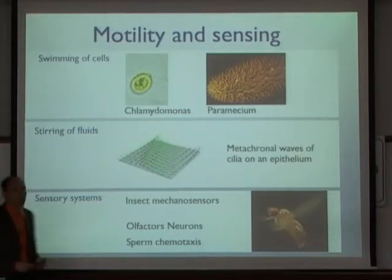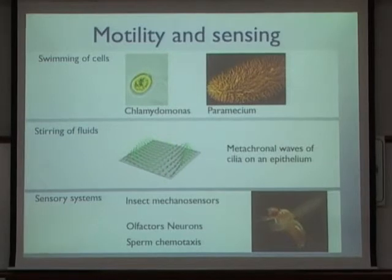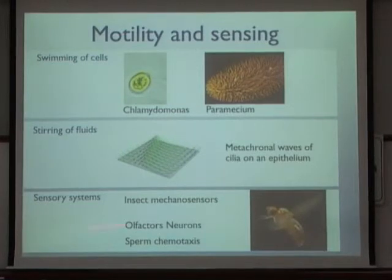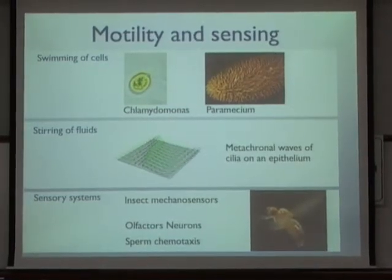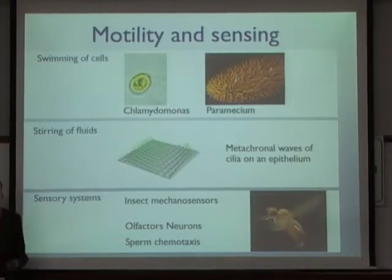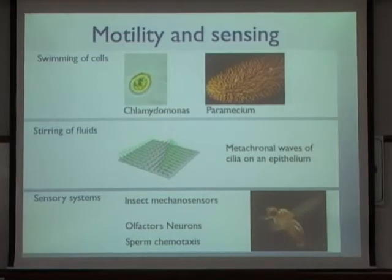Many cells, such as the epithelial cells of our airways, have a large number of flagella or cilia that beat in concert and collectively generate waves that move fluid. These flagella and cilia structures are also involved in many sensory systems — for example, insect mechanosensors are based on such axonemal structures, olfactory neurons have their chemosensitive receptors on the surface of cilia, and sperm steer while swimming using sensory systems related to olfactory senses.